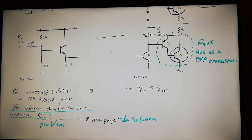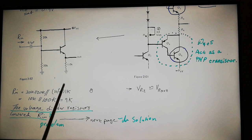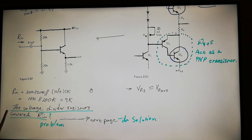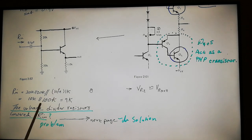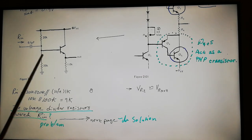R_in equals 20k in parallel with another 20k, in parallel with HFE multiplied by the 1k. Looking into the base of the transistor, you multiply whatever resistance is there by HFE. The little r_e is not included — it's only about 10 or 15 ohms and won't make much difference compared to the 1k. So the two 20k resistors give about 10k in parallel, and both are in parallel with 100k (assuming HFE = 100), giving an input resistance of around 9k.